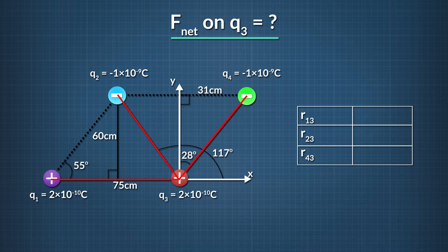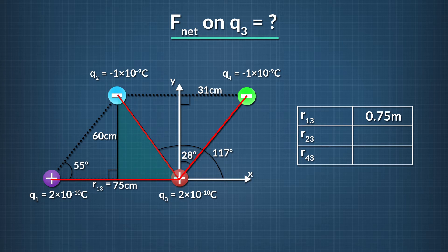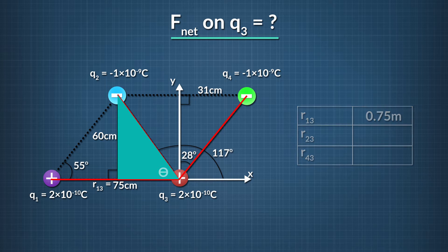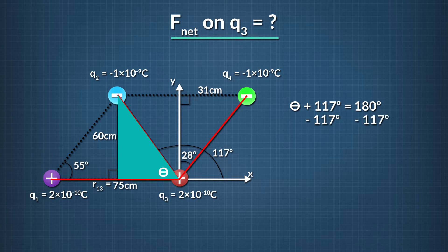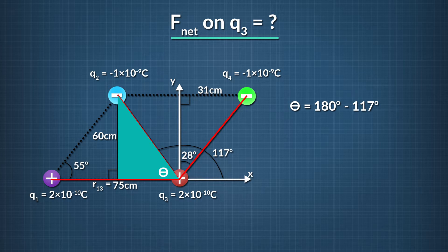r13 is already known — it's 75 centimeters, or 0.75 meters. To figure out r23, let's focus on the highlighted triangle. First, we'll solve for the angle marked as theta. We can see that theta plus 117 degrees equals 180 degrees. Subtracting 117 degrees from both sides, theta equals 180 minus 117 degrees, or 63 degrees.